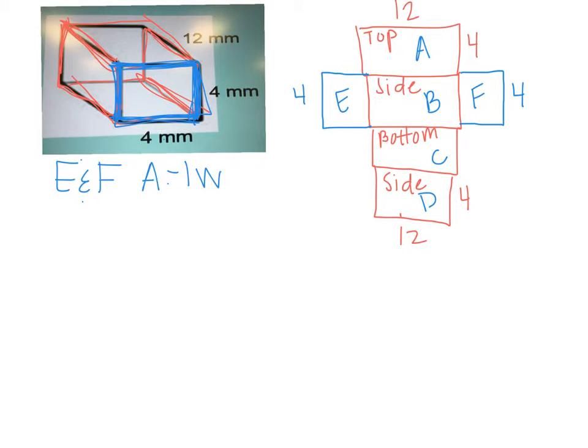So what's the area of just E? 16 millimeters squared. How many of them do we have that are the same? Two. So now we need to double it. What's two times 6? 12. Carry our 1. What's two times 1 plus 1? 3. So 32 millimeters squared.